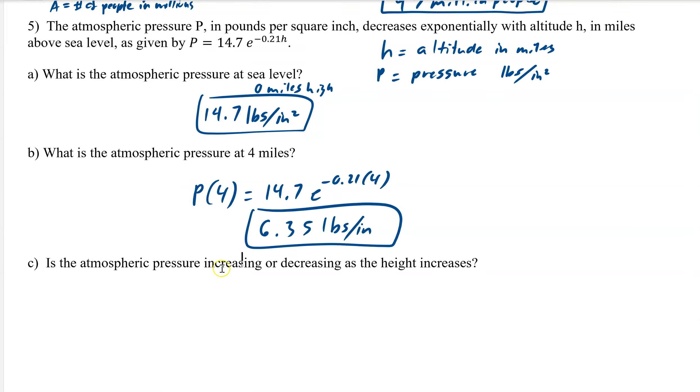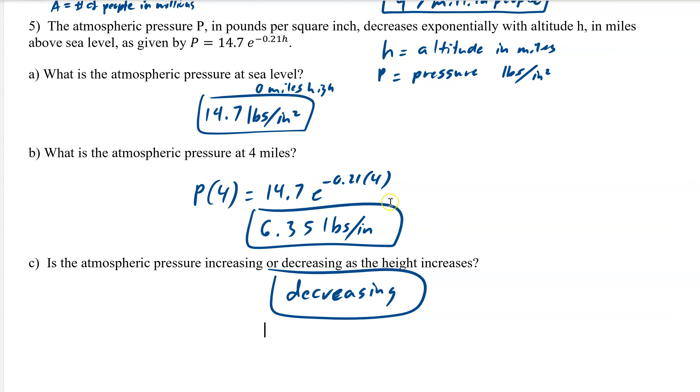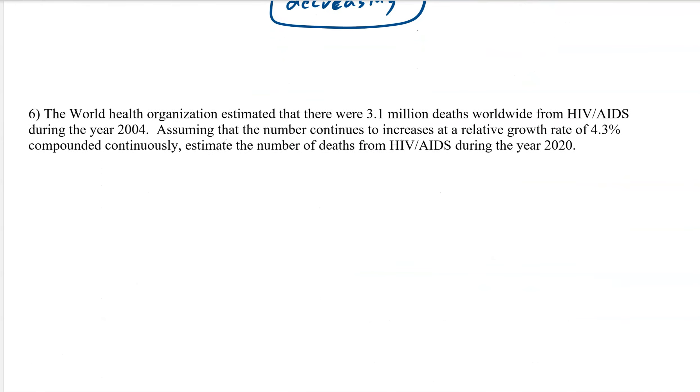So is the atmospheric pressure increasing or decreasing as height increases? And it's decreasing. You can see it in both ways. One, it says it's a decay rate, and the other, you can see it's actually going down. So as we increase our height from 0 to 4 miles, it's now 6.35.